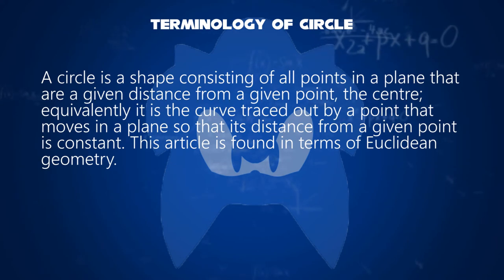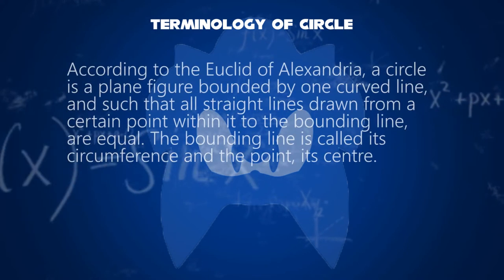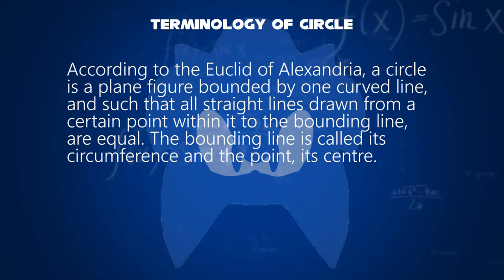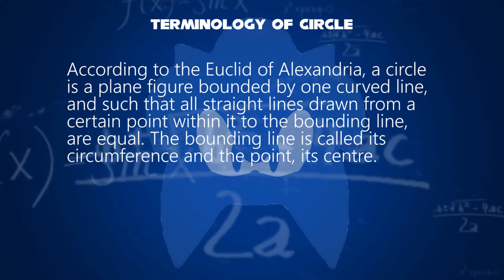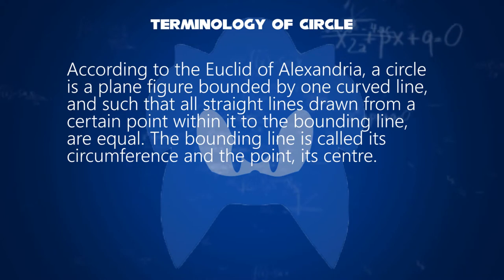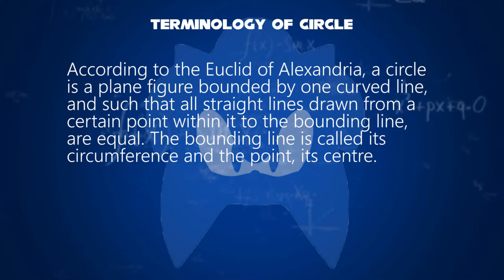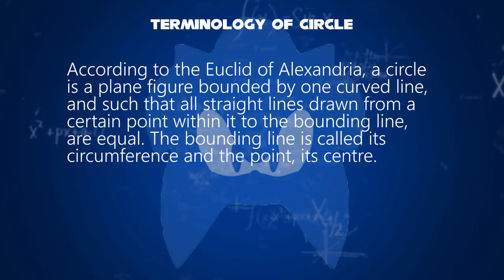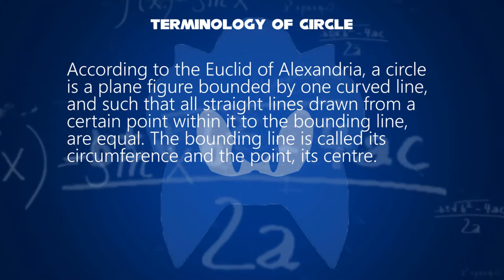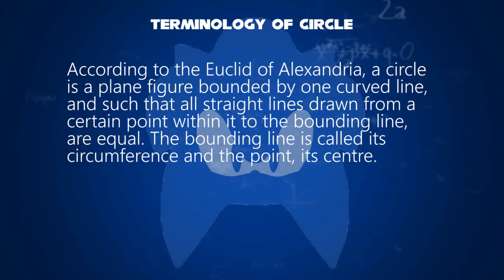This can be found in terms of Euclidean geometry. The definition of a circle is stated by Euclid of Alexandria: a circle is a plane figure bounded by one curved line, and such that all straight lines drawn from a certain point within it to the bounding line are equal. The bounding line is called its circumference and the point, its center.